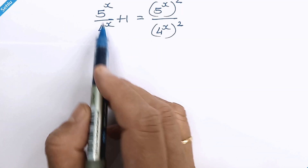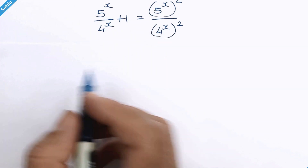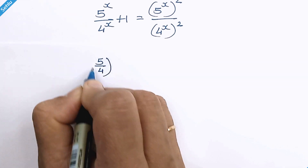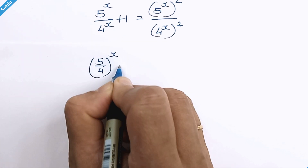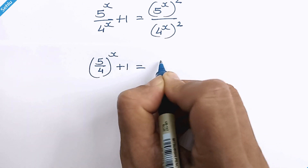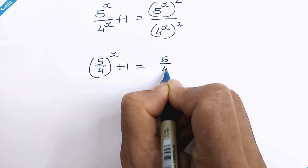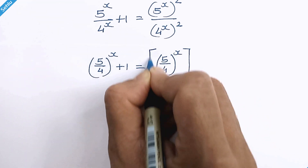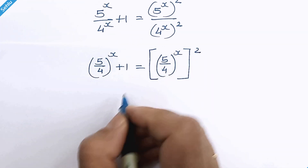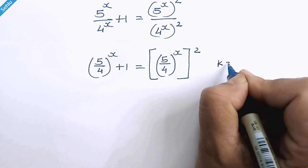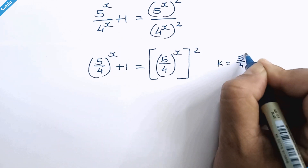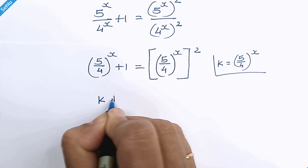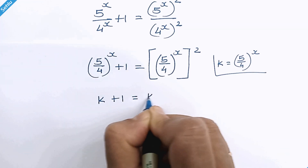Since these two have the same exponent and these two have the same exponent, we can combine them. So it becomes: 5 over 4, whole raised to x, plus 1, is equal to 5 over 4, whole raised to x, whole squared. We will take k in place of 5 over 4 whole raised to x, so it becomes k plus 1 is equal to k squared.